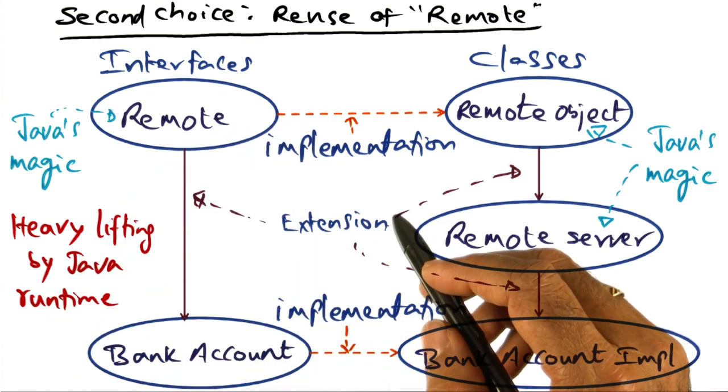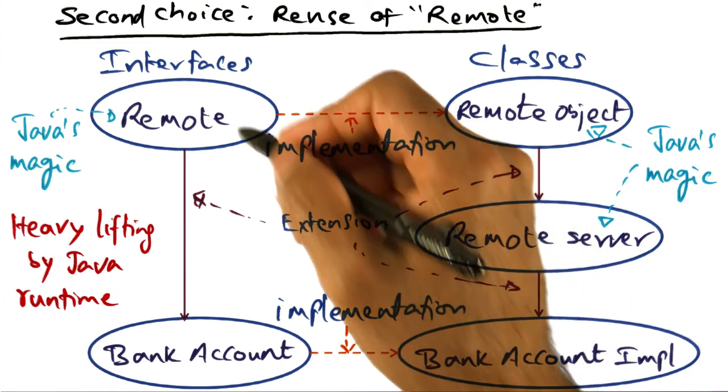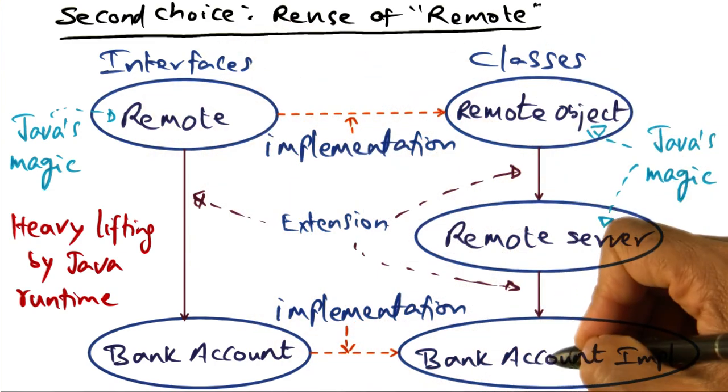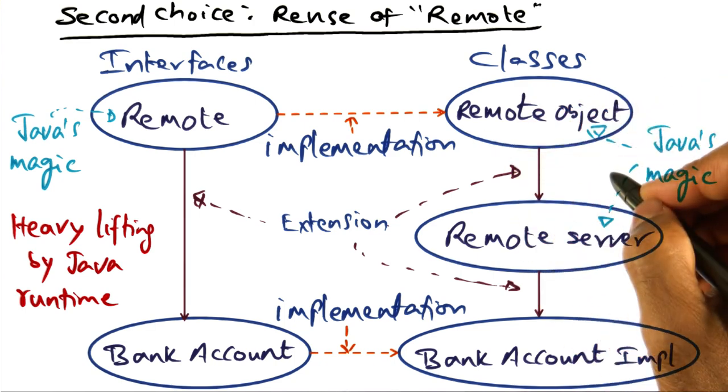Now that I've given you the difference between the two choices, one using remote interface, and the other deriving your object from the remote object in the remote server. Time for a quiz.